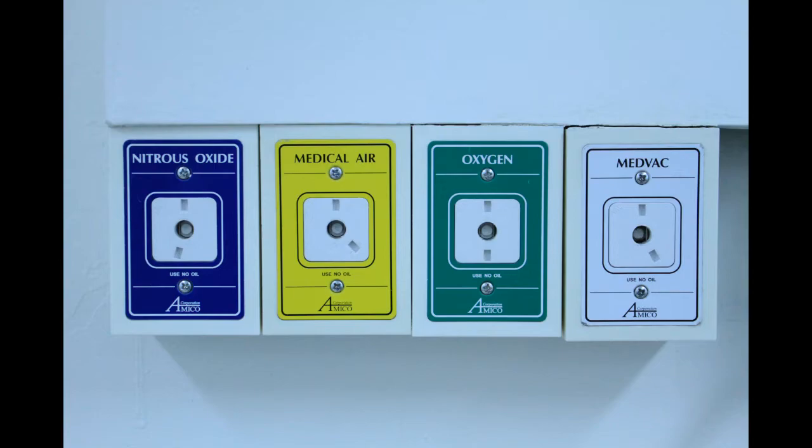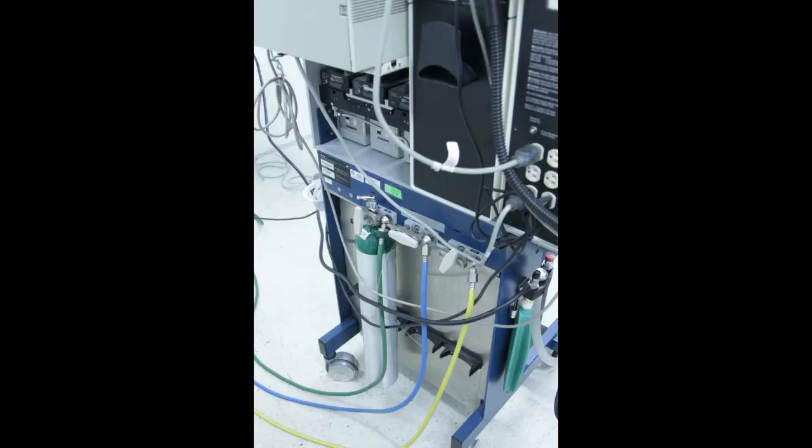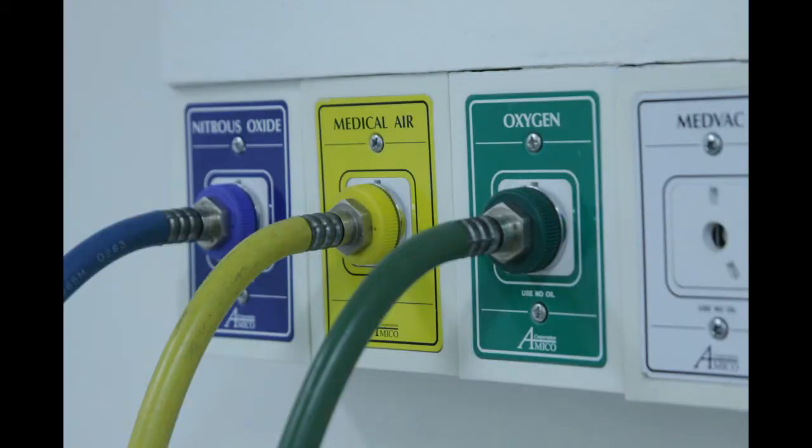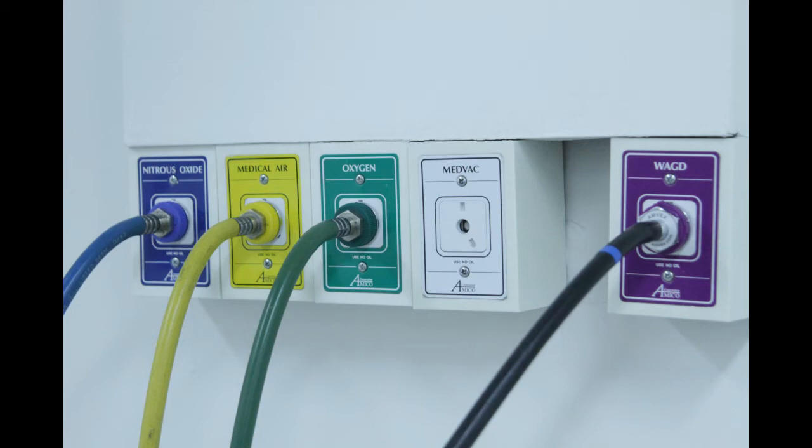There are two types of gas supplies: central supplies, also known as wall sources, and cylinders filled with compressed gas. Both typically consist of nitrous oxide, oxygen gas, and medical air, which is approximately 22% oxygen. Each of these is color coded. These colors differ between US and European standards, so areas that use equipment from both these regions may have both.